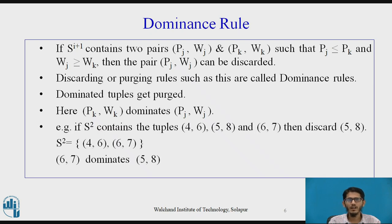We will take an example of it. Let us suppose we have s2 containing the tuples (4, 6), (5, 8) and (6, 7). Then, in that case, we can discard (5, 8) and make the set s2 contain (4, 6) and (6, 7). Now, why does this happen? When we compare these two tuples (5, 8) and (6, 7), in that case, 5 is less than 6 and 8 is greater than 7. Meaning, the tuple (5, 8) consists of the profit which is less and weight which is more. So, tuple with less profit and more weight is discarded. Hence, we can say (6, 7) dominates (5, 8).